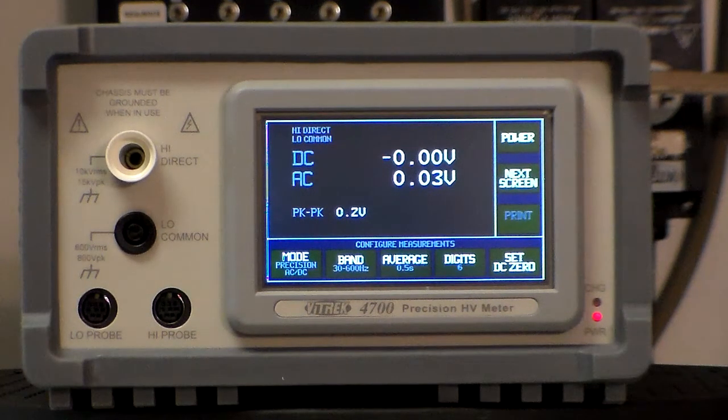Hello and welcome to VITREC. Today we're going to give a demonstration of the VITREC 4700 high voltage meter. This reads up to 10,000 volts AC or DC with a 15,000 volt peak voltage directly.